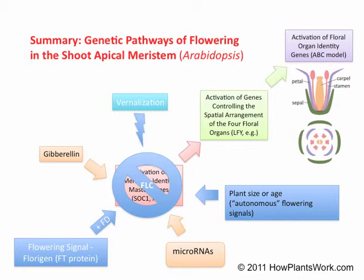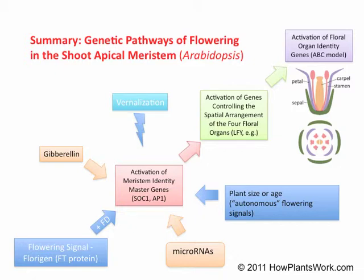We now know that vernalization works by effectively removing the FLC protein. When the FLC protein is absent, we say that the plant is competent to flower — that is, flowering may now occur under the right conditions. Even from this simplified overview, it's clear that the story of the genetics of flowering is a complex one. It's also important to note that the story varies depending on plant species, although the basic framework of the story is likely the same.